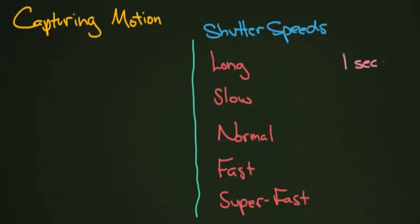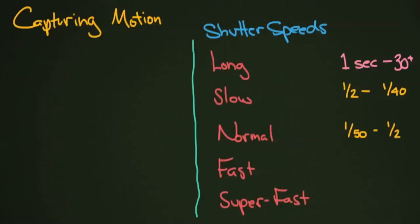A long shutter speed is about one second or longer — up to 30 seconds or more. That's quite a long time; a lot can happen in one second when taking a photograph. Slow shutter speeds are somewhere between one-half and one-fortieth of a second — a pretty wide range where you can get lots of motion blur. Starting around one-fiftieth or one-sixtieth of a second, the shutter speed gets high enough to do something with it, so I'd call that an average or normal shutter speed.